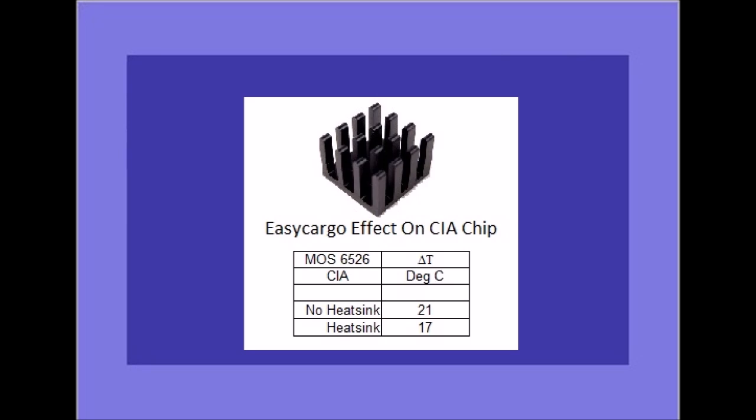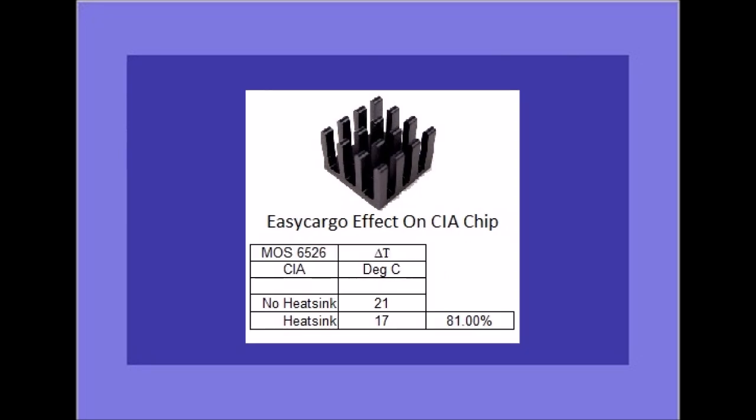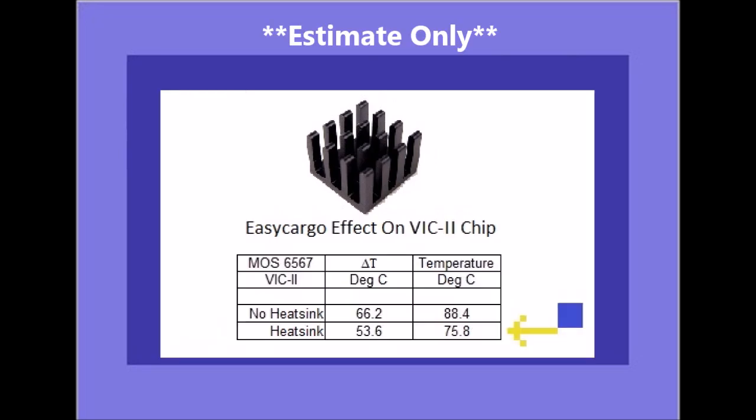With the Easy Cargo heatsink applied to the CIA chip, we had a temperature rise that was only 81% of the temperature rise when no heatsink was installed. If you apply this 81% to a VIC-2 chip that gets up to about 88 degrees Celsius at a room temperature of 22 degrees Celsius, you would probably get about 75 or 76 degrees Celsius for a temperature rise on the VIC-2 chip with the Easy Cargo heatsink installed. I believe that represents a best case estimate for the effectiveness of the Easy Cargo heatsink were it applied to a VIC-2 chip.